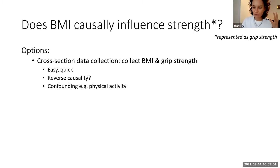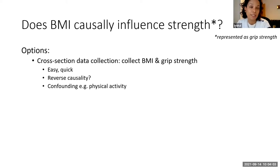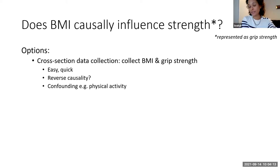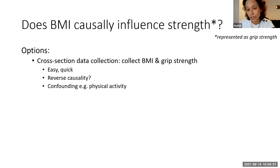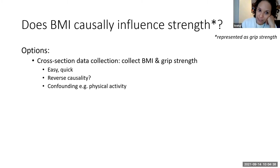When you have an exposure and an outcome measured at the same time, you don't know if X is causing Y or Y is causing X. You also have issues around confounding — physical activity will influence BMI and physical activity will influence strength. I can ask everyone how much physical activity they do and adjust for that in my models, but there could still be residual confounding because maybe I haven't measured physical activity well enough, or I forgot to ask about smoking status, which can influence both BMI and strength.